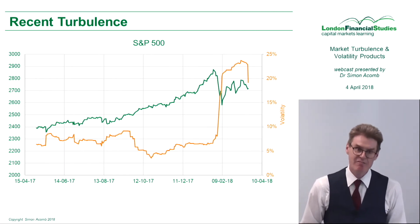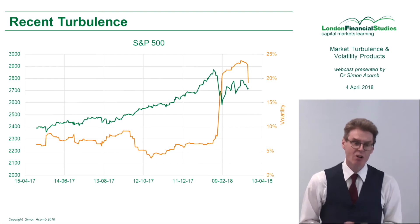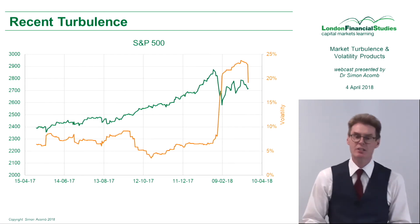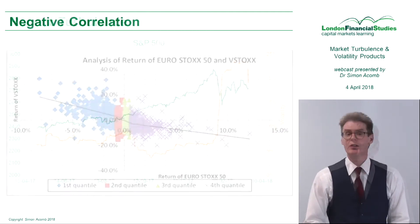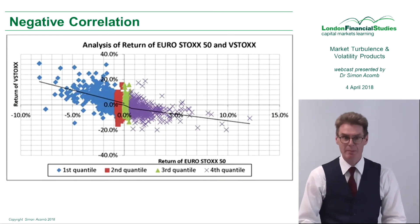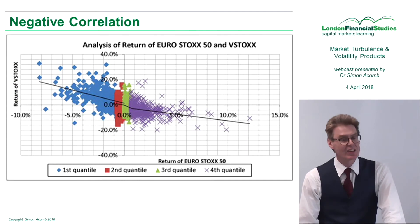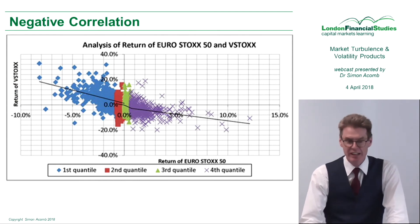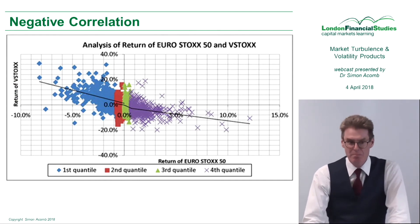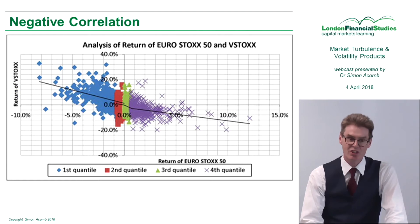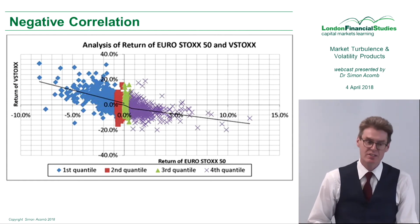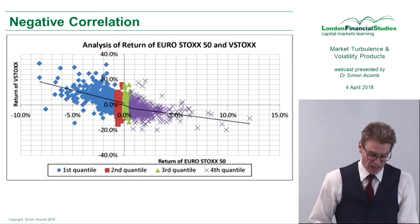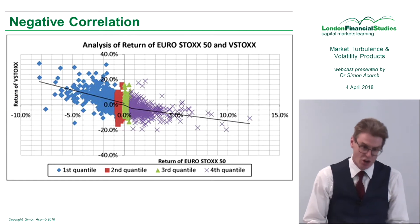And this has given rise to a whole range of different volatility products that are out there in the market. Just a brief word of warning about these products: there is actually a negative correlation, but the relationship between the returns on the underlying markets and returns on volatilities isn't linear. And that's what this chart tries to show.